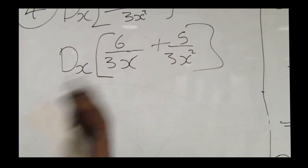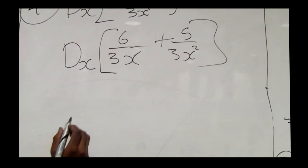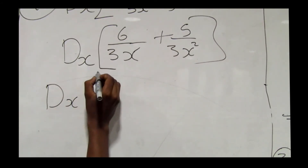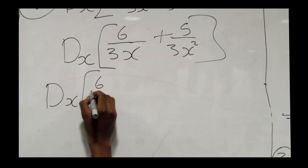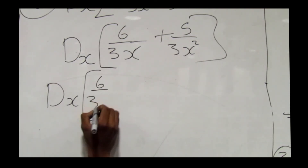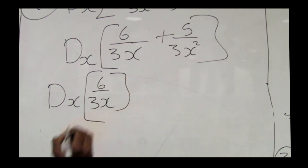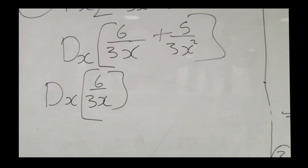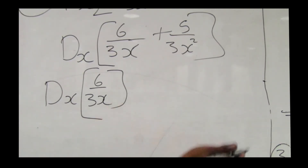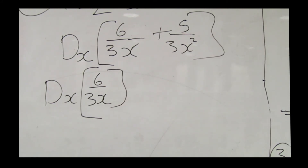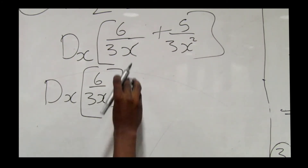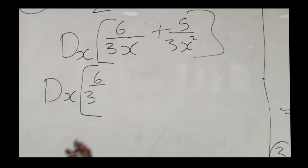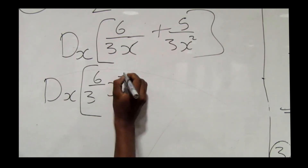After distributing, we get d/dx of 6 over 3 times x to the power negative 1, since we move x to the numerator making its exponent negative one.